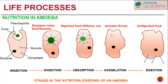Food is ingested and taken in — enzymes enter into the food vacuole. Diagrams one and two show how the food is trapped and enclosed within a food vacuole. Absorption takes place where all the food material is absorbed, and the digested food is diffused out within the cytoplasm. Due to this, assimilation takes place and the amoeba grows in size. Whatever food material is not required is egested — undigested food is removed from the body of the amoeba.